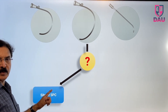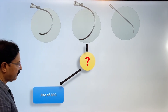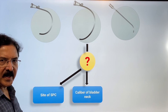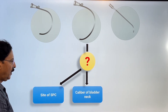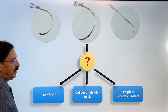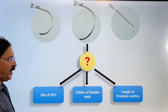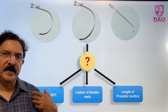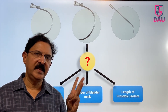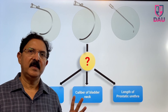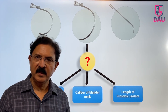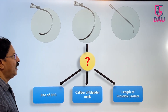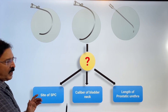The ways to know this are: look at the site of the suprapubic catheter, look at the caliber of the bladder neck, and look at the length of the prostatic urethra. So there are these three factors which influence your decision about which bougie to use in which case. I'll elaborate on these points now.